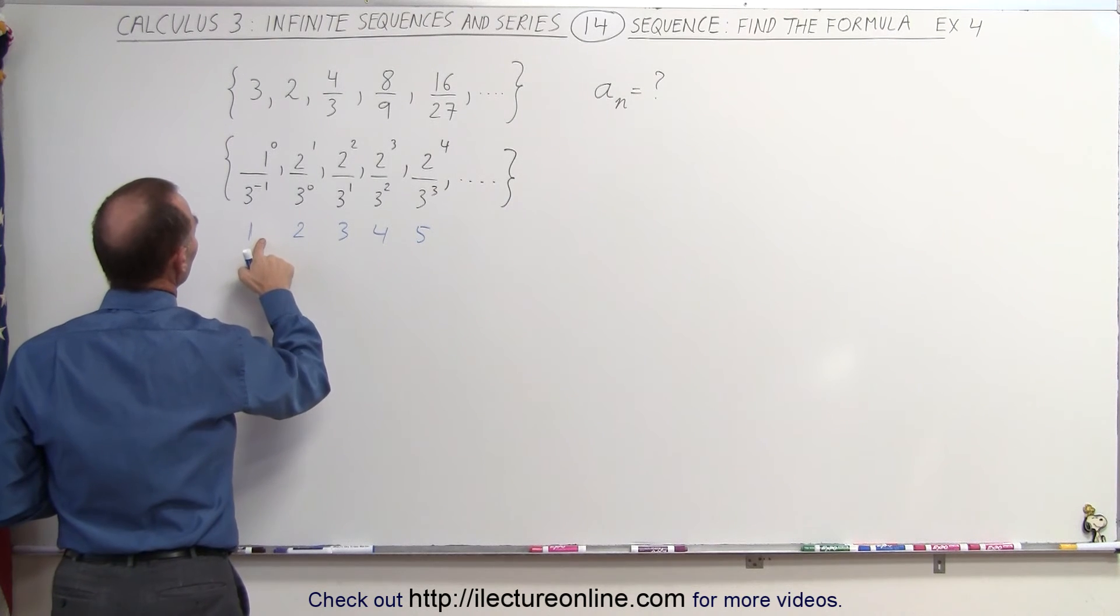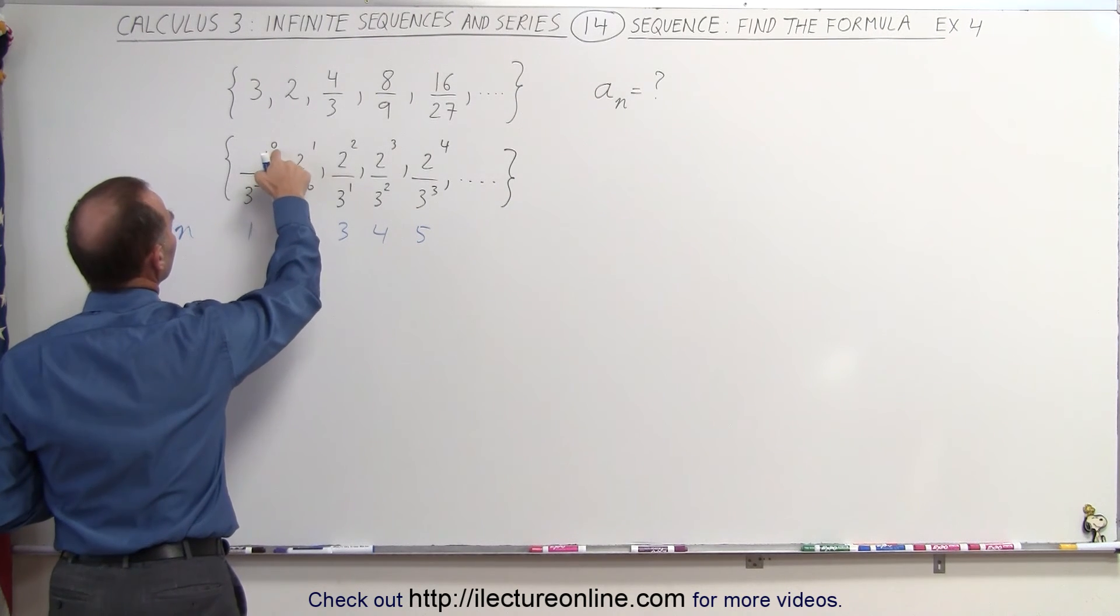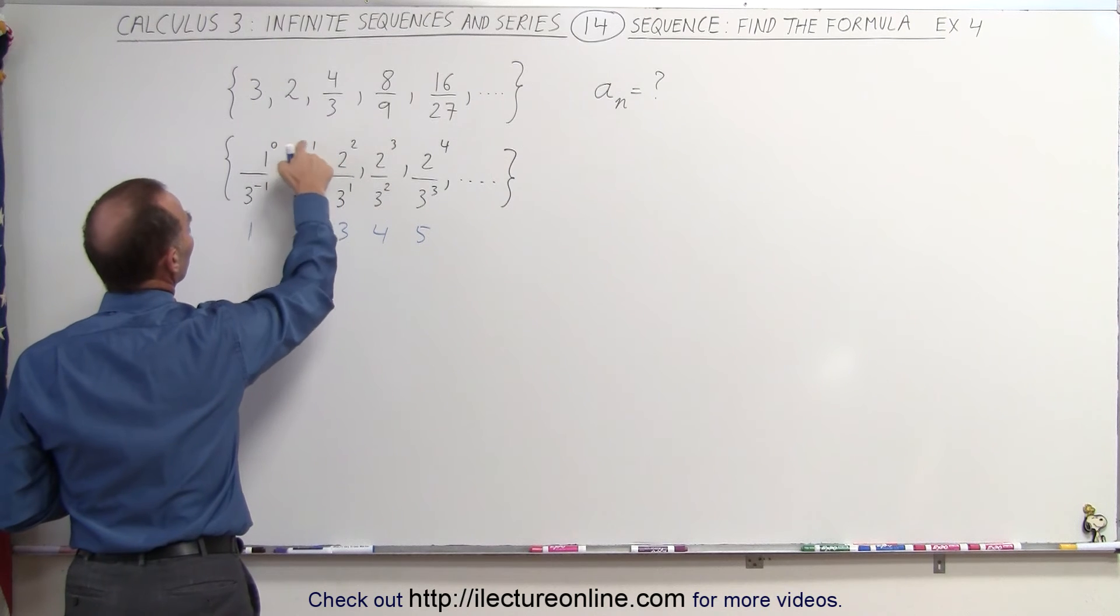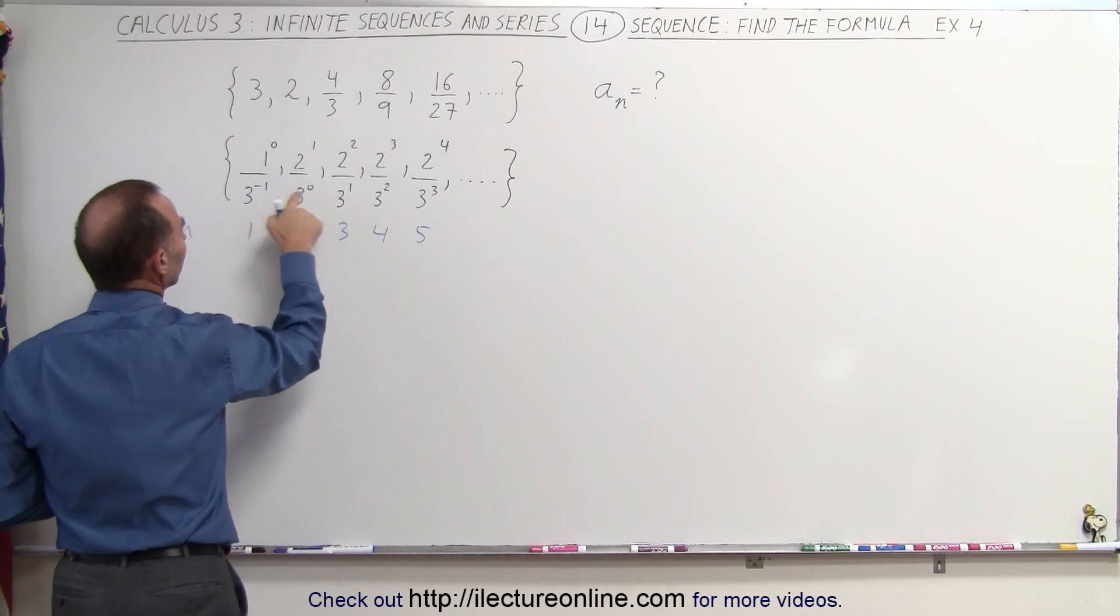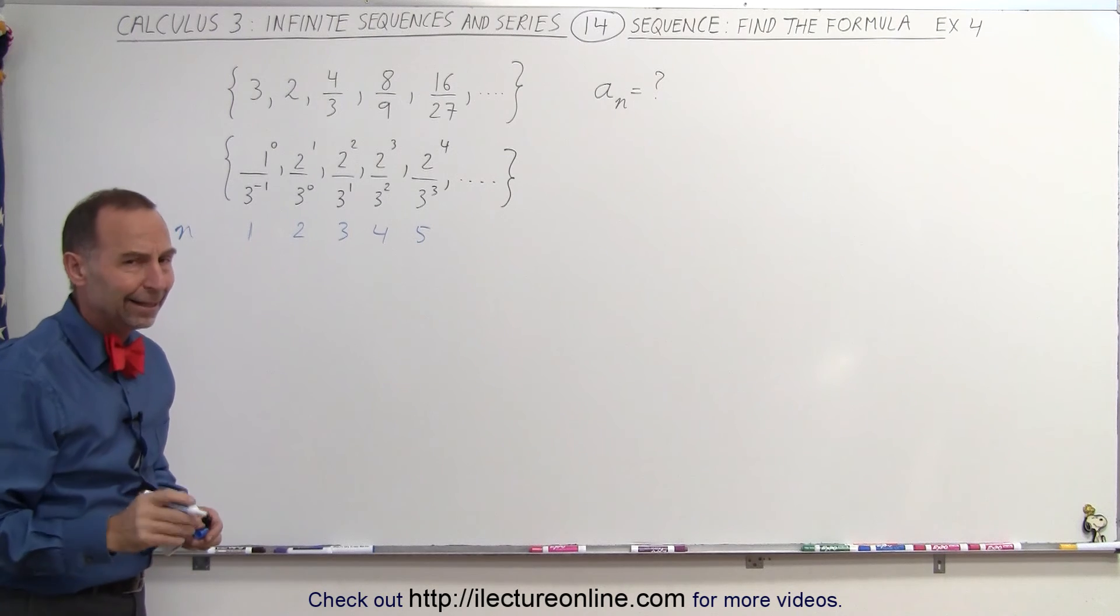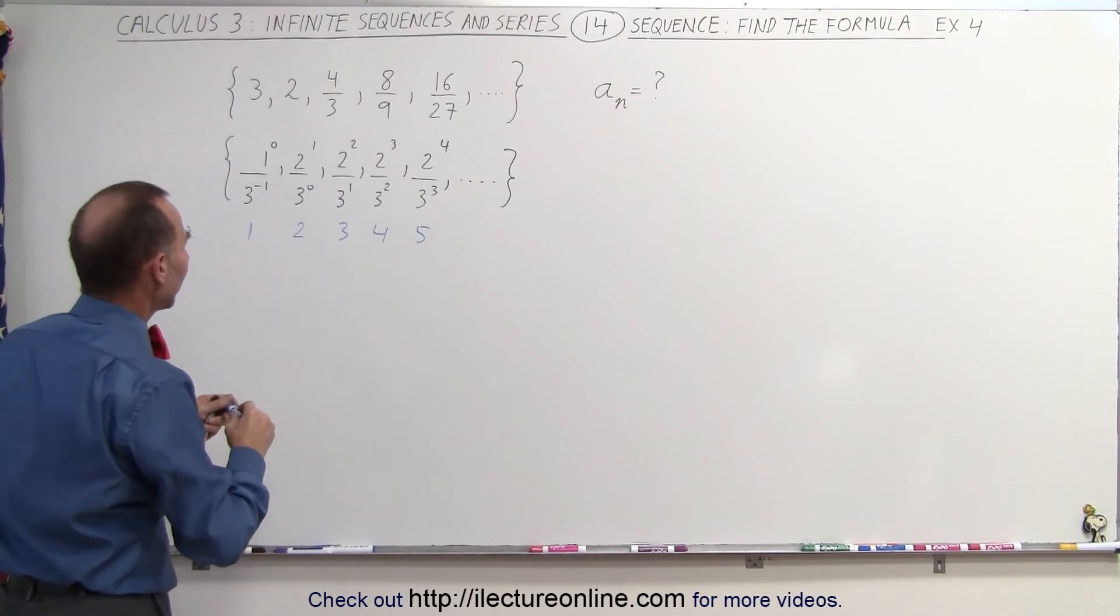So notice that we're a little out of sequence. For the numerator, the exponents are 1 less than n. In the denominators, the exponents are 2 less than n. So now I think I have the pattern of this.